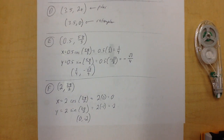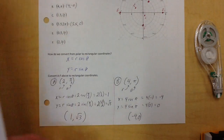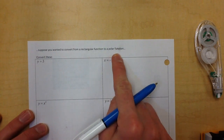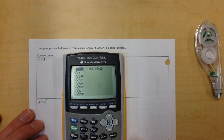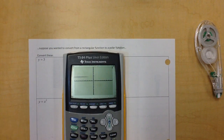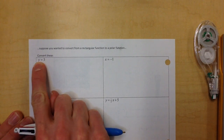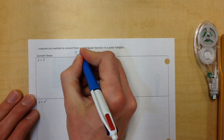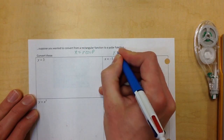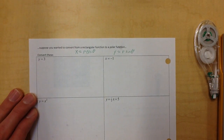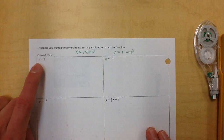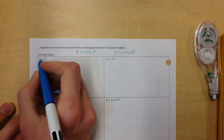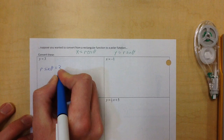Now we're going to convert some equations. Suppose you wanted to convert from a rectangular function to a polar function — for example, y = 3. I know what that graph looks like: it's a horizontal line through 3. Since y = r sine theta, we can replace y. So what we really have is r sine theta = 3.